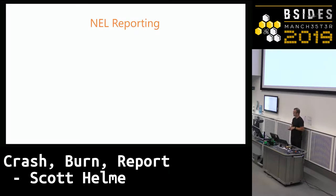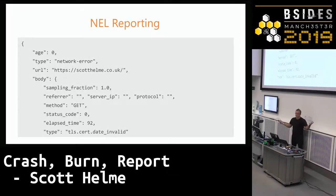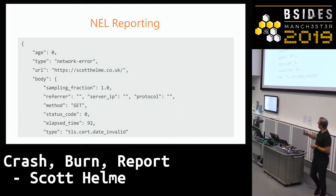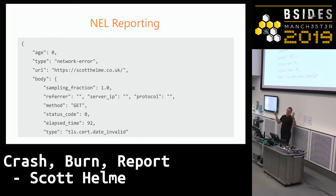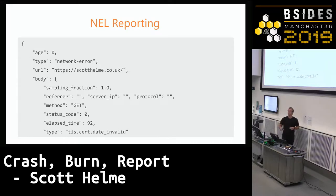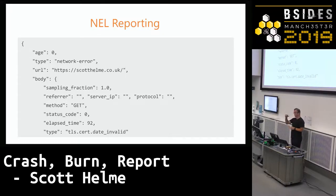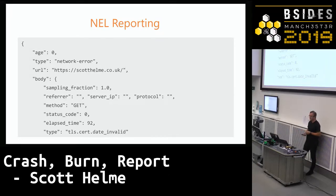It's a simple JSON payload sent as an HTTP POST request. As soon as you hit the error, the browser sends this report. The 'age' field shows how long the browser cached the report before sending — the browser might be offline and hold it temporarily, so age indicates 'this happened four minutes ago, not right now.' The browser will cache reports and send them when it's back online, so you won't miss anything.